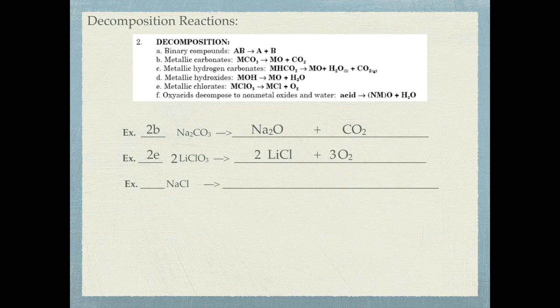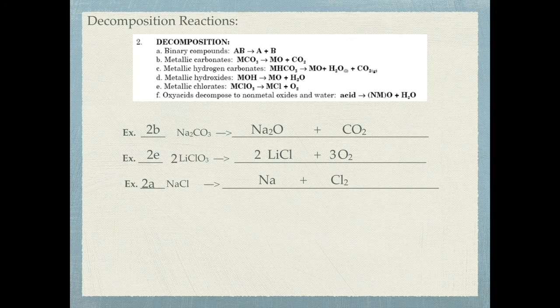For the last example, NaCl has just two elements, so it's a 2A reaction and breaks apart into its elements: Na and Cl. Remember Cl is diatomic, so write Cl2. To balance, put a two in front of NaCl to get two chlorines, giving 2NaCl → 2Na + Cl2. Those are synthesis and decomposition reactions — now you get to practice.